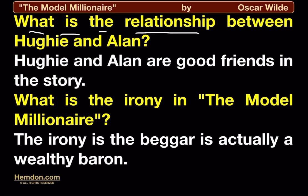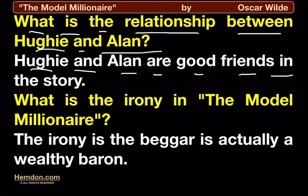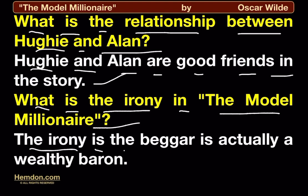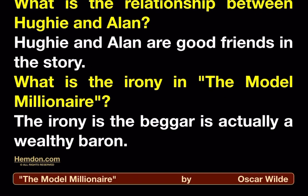What is the relationship between Hugh and Alan? Hugh and Alan are good friends in the story. What is the irony in The Model Millionaire? The irony is that the beggar is actually a wealthy baron.